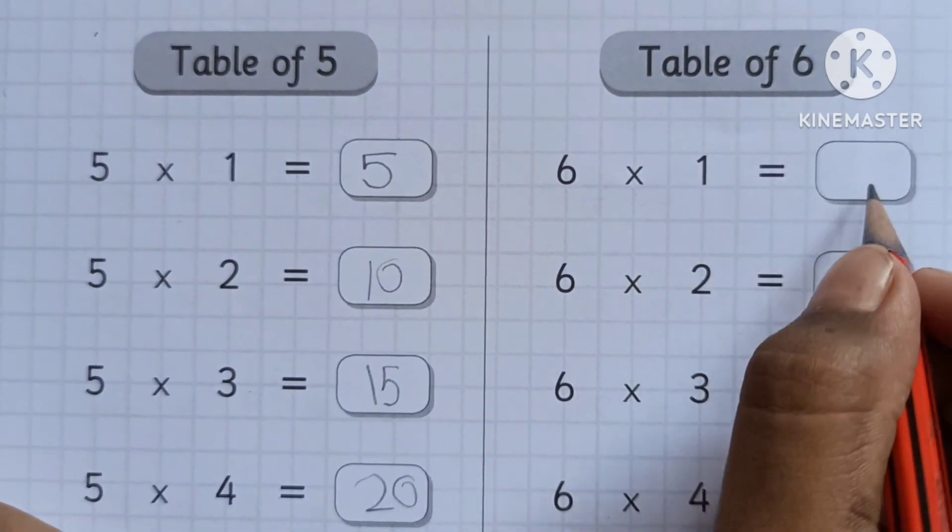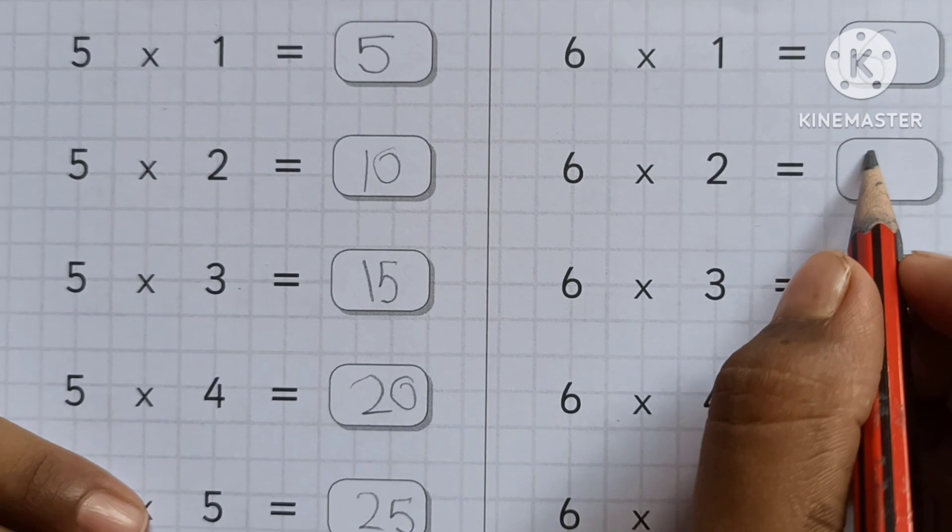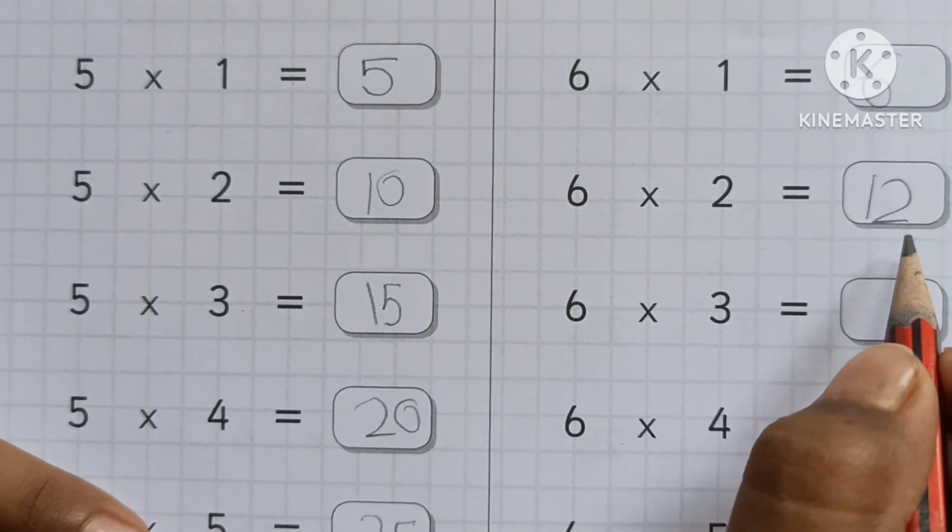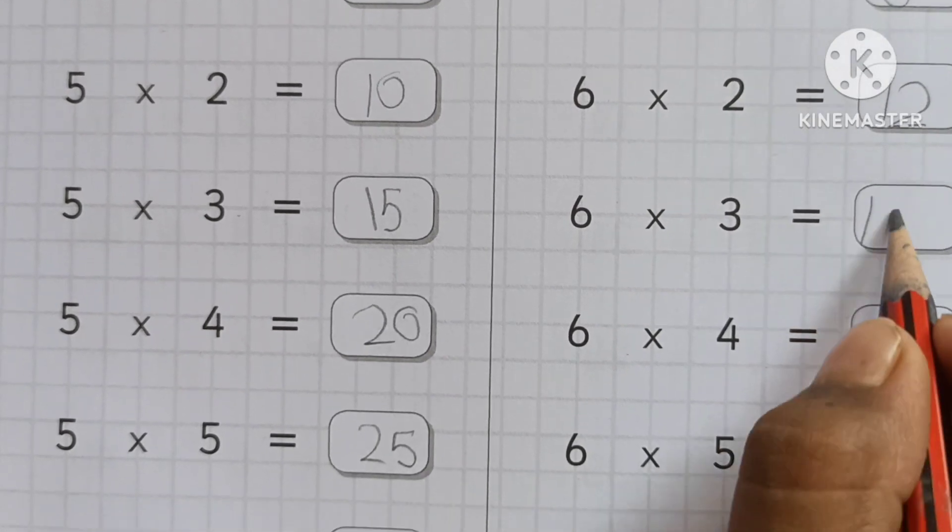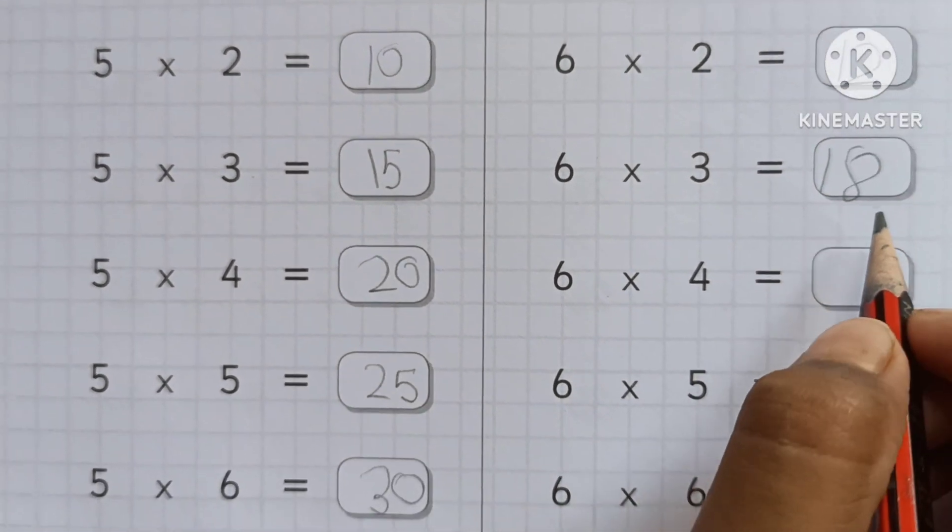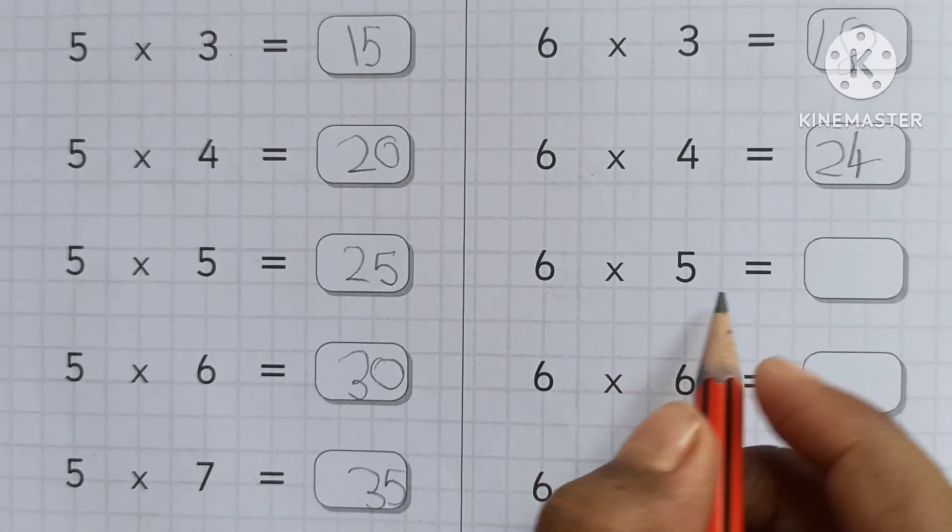Six ones are six. Six twos are twelve. Six threes are eighteen. Six fours are twenty-four. Six fives are thirty.